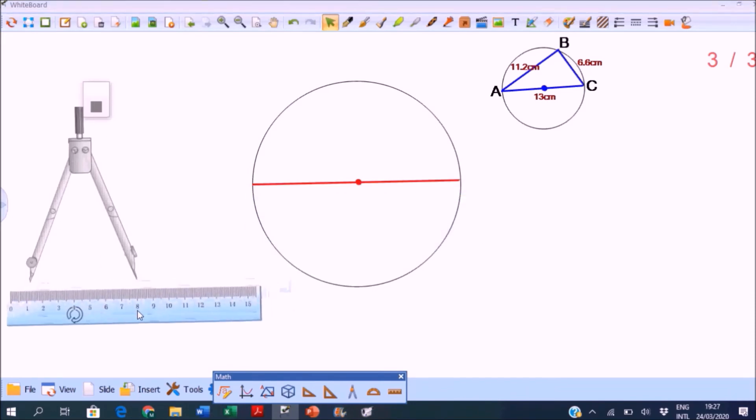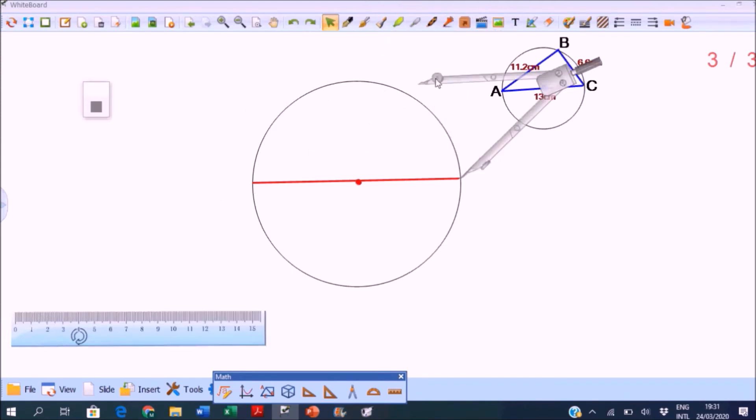Then open the compass to 6.6 centimeters and adjust it. Place the needle on the right endpoint of the diameter, then cross the circumference with an arc.